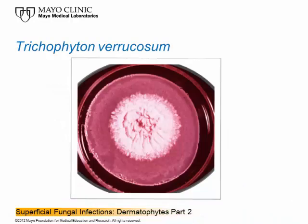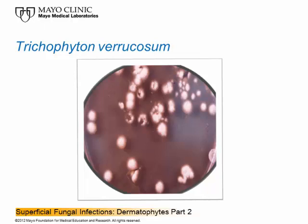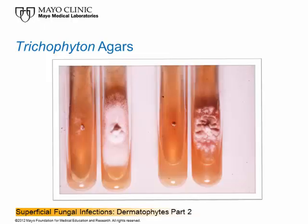A culture of Trichophyton verrucosum shows the medium actually pulled away from the sides of the petri dish because it's been incubated for so long, yet the colony size is not all that large — they take a very long time to grow. The Trichophyton agars, used for many years, had thiamine and inositol separately or combined. The left-hand side is a control without those compounds; the right-hand one shows enhanced growth with thiamine and inositol. That is how Trichophyton verrucosum was historically identified.